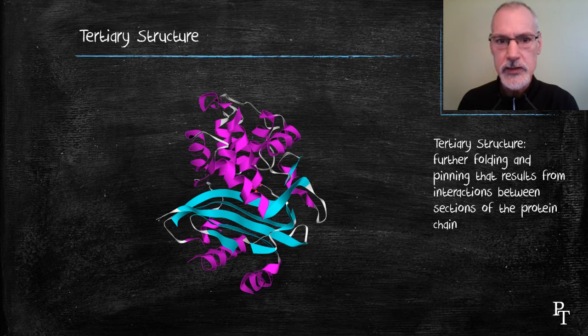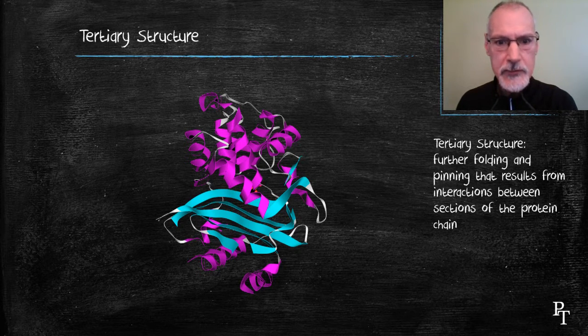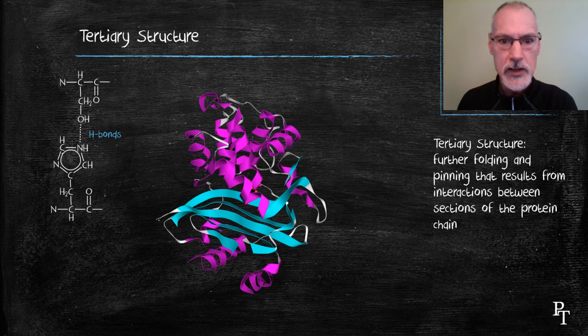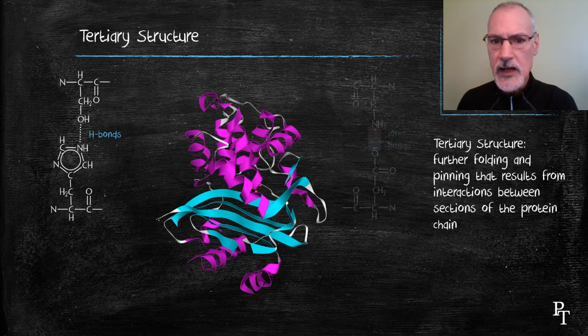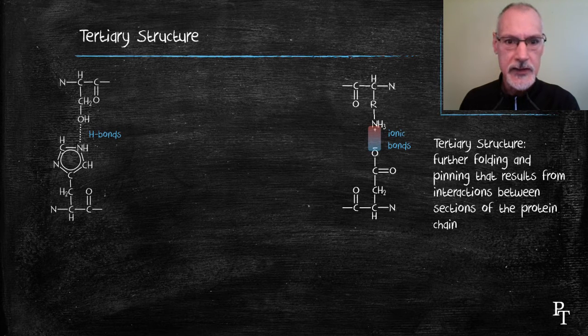That tertiary structure can result from four further interactions. One could be hydrogen bonding that takes place between the R groups that are attached to our amino acids. You can also get ionic bonds forming. These result from forms of the Zwitter ion that can take place.